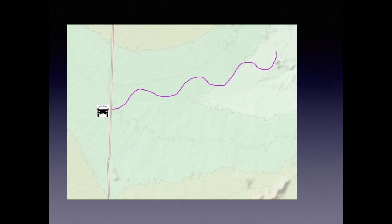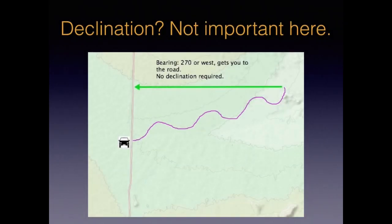Now that you know what declination is, some of you might be wondering: do I really need to care about this? The answer is sometimes. If you just need a general direction, then you can probably ignore declination. For example, say you parked your car on a north-south running road and hiked away from it for an hour with your route drawn by the purple line. To get back to your car, a look at the map shows that if you simply walk in the general direction of west, or 270 degrees, you'll have to hit the road. Declination doesn't really matter — you might be 10 or 20 degrees off of walking a true west bearing, but you're still going to hit the road. The navigation term for the road is a catching feature, or sometimes called a backstop, and these can be very nice to have.